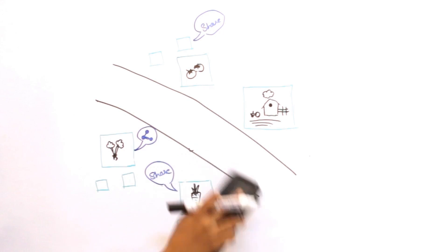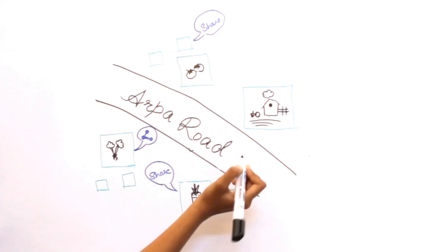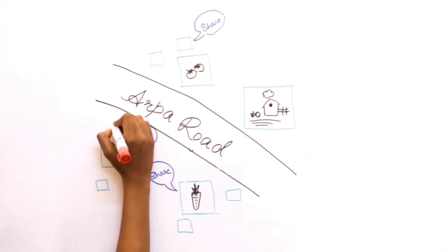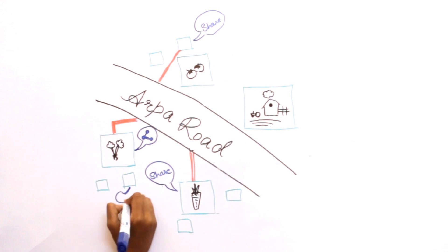Hence, the government decided to lay down the first ever road of Murika and named it the Arpa Road. To this road were connected all those farms which wanted to share their vegetables with each other. Thus, the flow of vegetables was set.